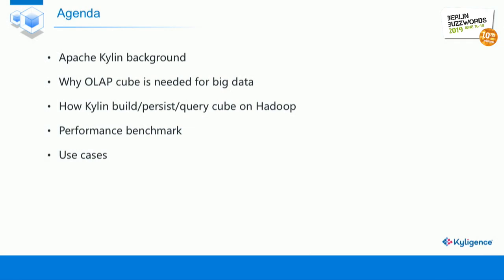This is today's agenda. Firstly I'd like to introduce the background of this project: what is the problem we are facing and what's the solution we proposed. Next I will introduce how Apache Kylin builds, stores and queries the OLAP cubes on Hadoop. I will also give a simple performance benchmark. In the final part I will introduce several use cases.